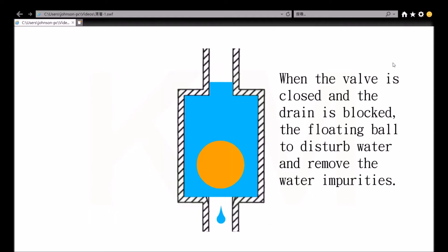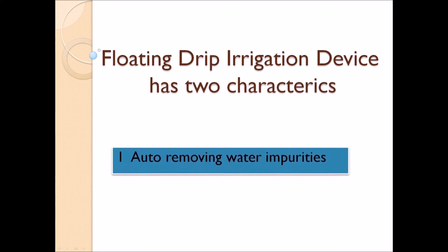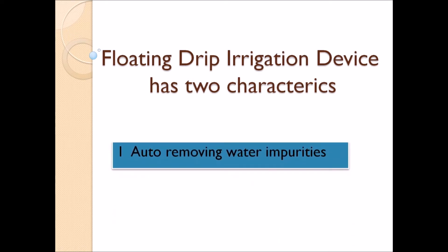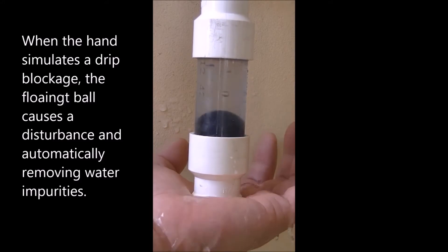When the valve is closed and the drain is blocked, the floating ball disturbs water and removes water impurities. When the hand simulates a drip blockage, the floating ball causes a disturbance and automatically removes water impurities.